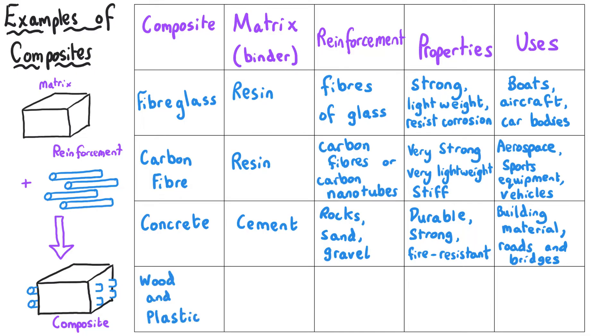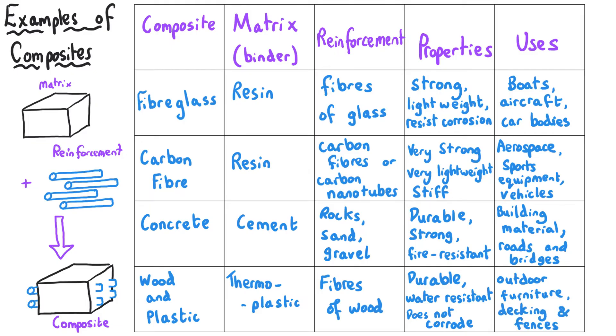In this instance, the matrix is a thermoplastic, more about that later, and the reinforcements are fibers of wood running through this plastic, and when that plastic sets hard, you end up with a very durable, water-resistant material that requires very little maintenance because it doesn't corrode. And this makes it a really useful composite for outdoor furniture, decking, fencing, it's really growing in popularity because of that low maintenance requirement.